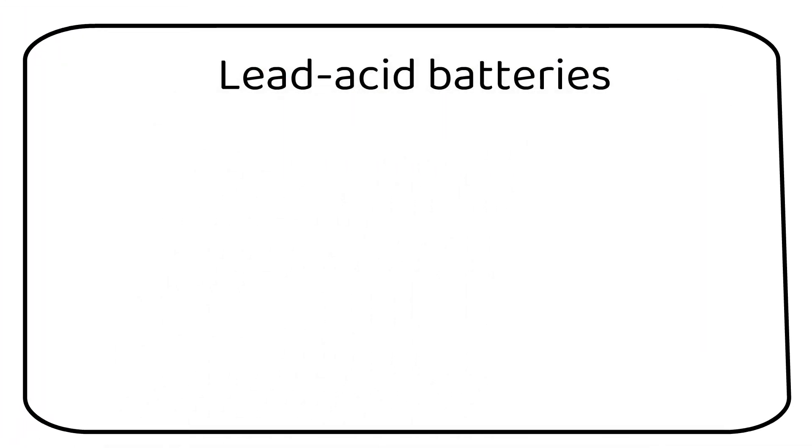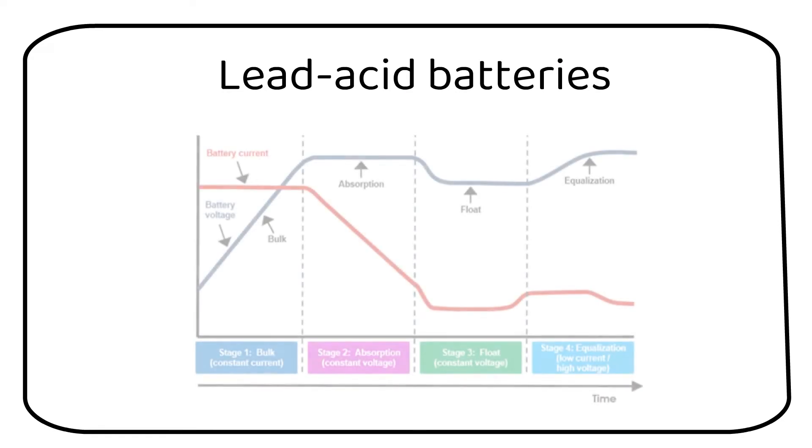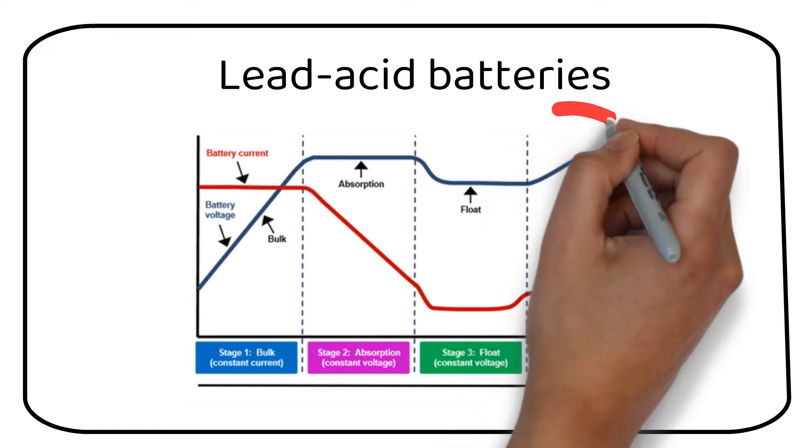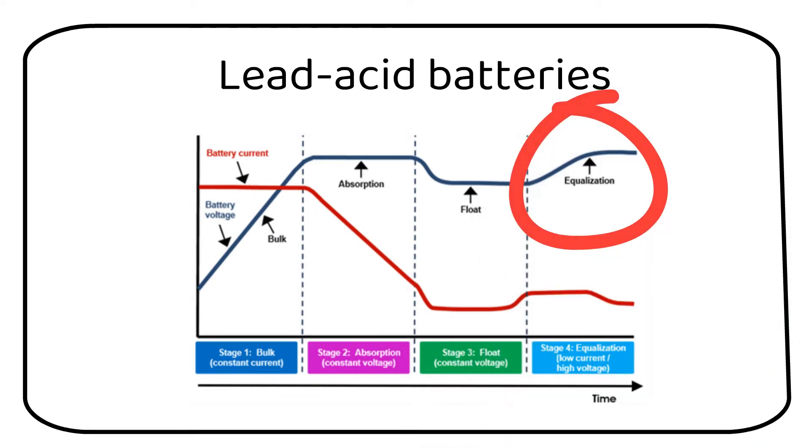Charge controllers for lead-acid batteries have an equalization or anti-sulfation function. This means that the voltage will increase by 10% once per month or multiple times per year depending on the settings. This can be a problem when you have multiple charge controllers. It can lead to overuse of the equalization function. You need to have only one charge controller performing this function.